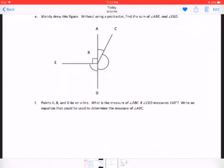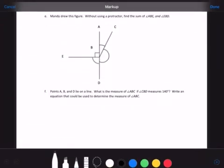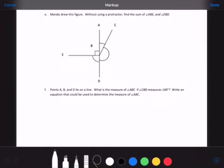Let's go on to the next problem. Here we have E and F. E says, Mandy drew this figure. It says, without using a protractor, find the sum of angle ABE and angle EBD. First thing I'd like to do is above the word sum, just write a plus sign, so that we remember we need to add that together. So we have angle ABE, which is 90 degrees. I can tell because it has the box in the corner.